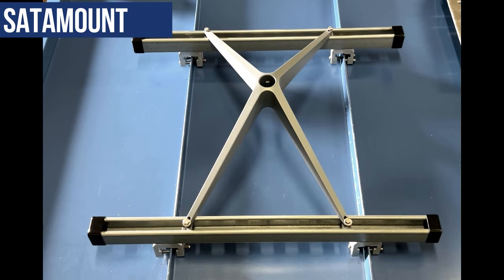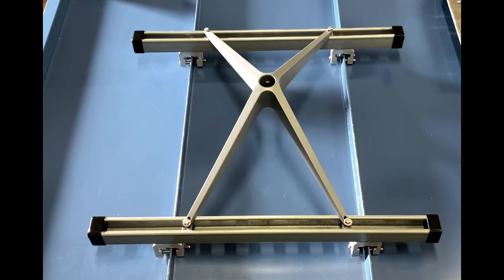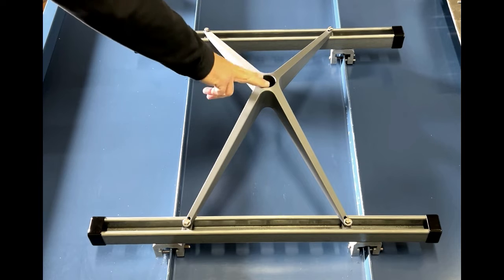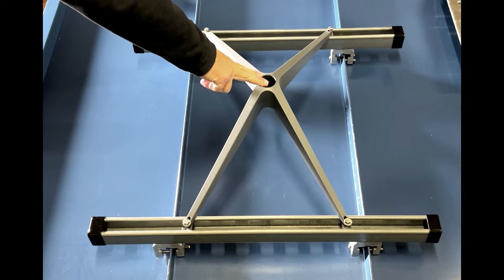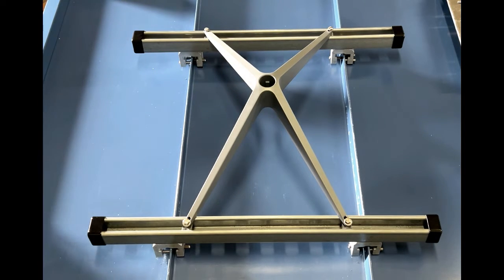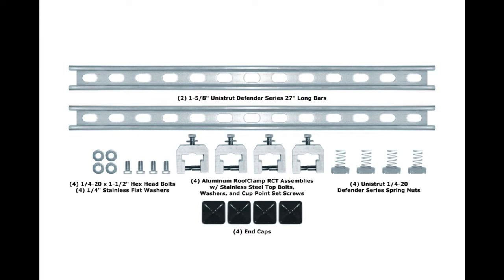This is the SATA mount kit. As you can see, there's actually a Starlink satellite mounting base attached to it, but the SATA mount kit consists of the two 27-inch sections of Unistrut. This has a proprietary finish that is more non-corrosive than stainless steel. In rural areas, this can get over a hundred years of continuous life with this Defender finish on this Unistrut.